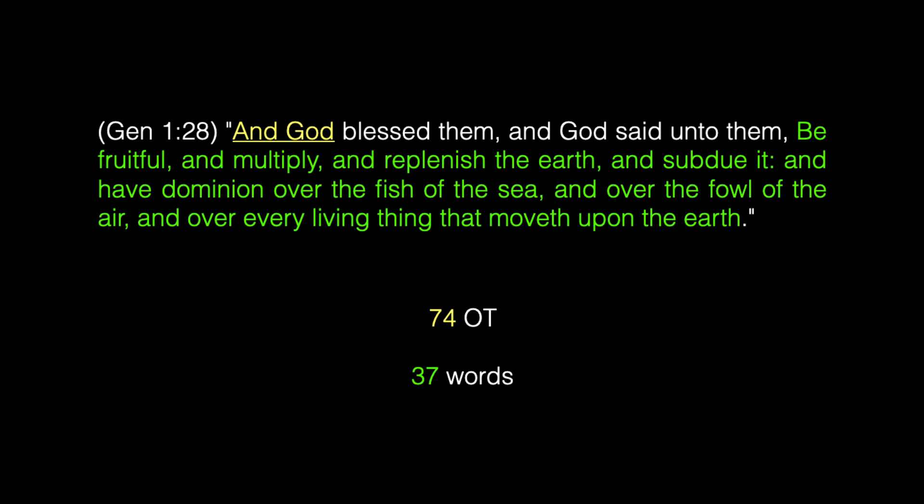Let's look at Genesis 1:28: 'And God blessed them and God said unto them, Be fruitful and multiply and replenish the earth and subdue it and have dominion over the fish of the sea and over the fowl of the air and over every living thing that moveth upon the earth.' After God creates man, he speaks 37 words to the man. These 37 words represent the good seed. In Luke 8:11 we are told that the good seed — as stated in Matthew 13:37 — is the word of God. In Genesis chapter 3, we will see that corrupt seed gets sown.